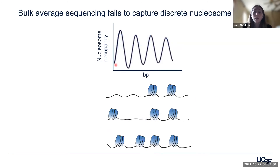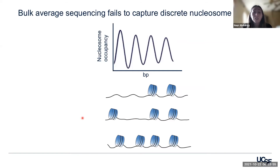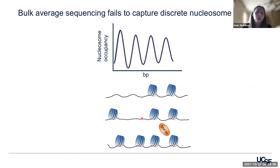Another drawback associated with these methods is bulk-average sequencing. Current methods to map nucleosomes take bulk-average measurements of the fragment reads, so you do not get sequence-specific resolution of your mapped nucleosomes. For instance, a particular locus might be frequently subject to sliding or eviction of nucleosomes, but your bulk-average nucleosome occupancy and regularity measurements won't be able to capture that discrete pattern. This would be very compelling information to have, especially in the context of ATP-dependent chromatin remodelers.